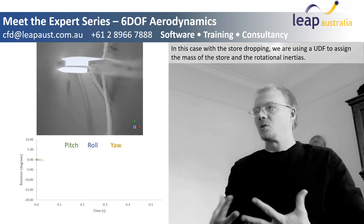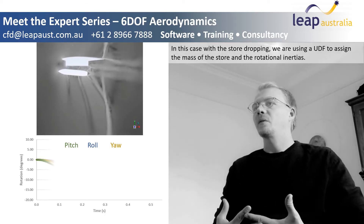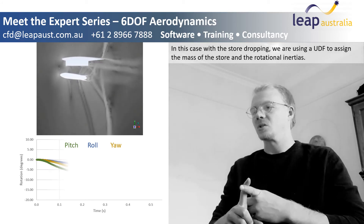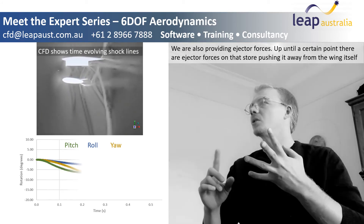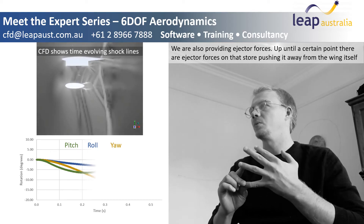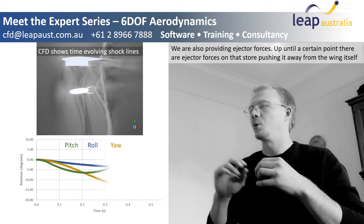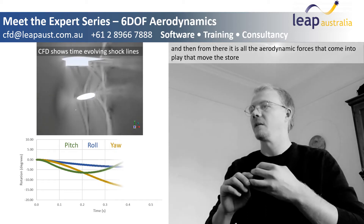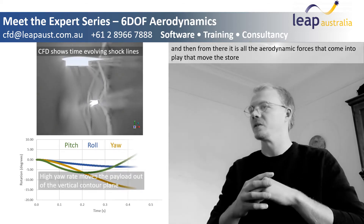In this case with the store dropping, we're using a UDF to assign the mass of the store and the rotational inertia. We're also providing ejector forces. So up until a certain point there are ejector forces on that store pushing it away from the wing itself, and then from there it's all the aerodynamic forces that come into play that move the store.